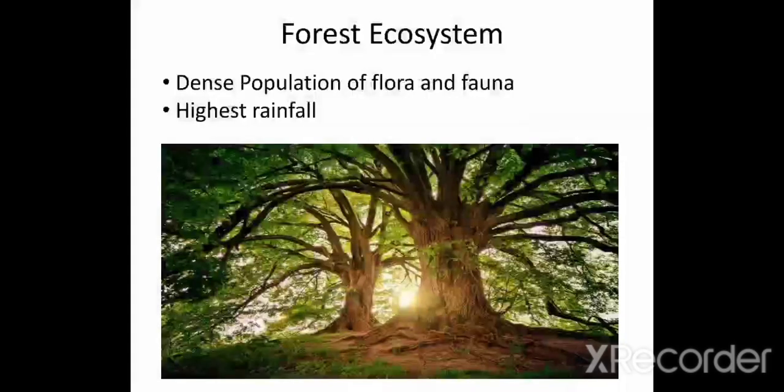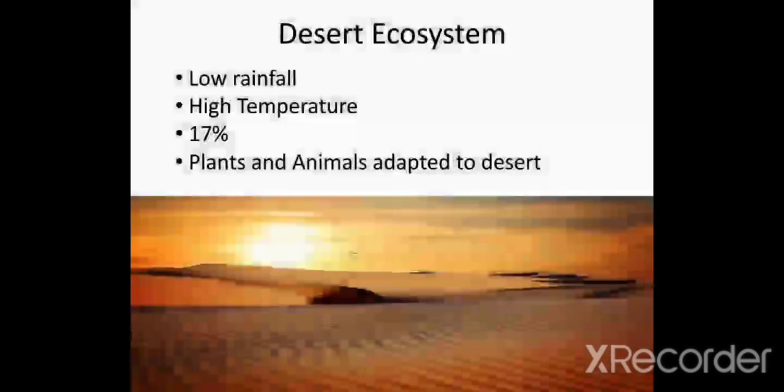Forest ecosystem has a dense population of flora and fauna. Flora means plants and fauna means animals. This ecosystem has highest rainfall. Desert ecosystem: deserts receive low rainfall, not more than 25 millimeters, and they have very high temperature.